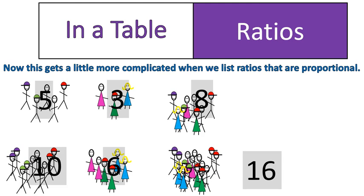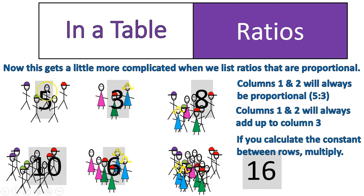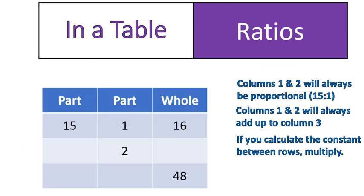Now we can learn some things from this table. We can see that column one and column two will always be proportional, and they will have the same proportion, five to three. We can also see that column one plus column two will equal column three. That makes sense. It's part, part, and the whole, right? Boys plus girls equals total number of students, so that will be consistent. Also, and this one here is maybe not as obvious, but you can calculate a constant between the rows. I don't know if you noticed this here, but five times two equals ten, so two is our invisible constant there. Five times two, three times two, eight times two. You will have a constant that you can multiply between the rows, and that's what we're going to use as we fill in a table that looks like this.